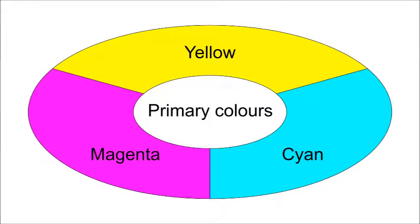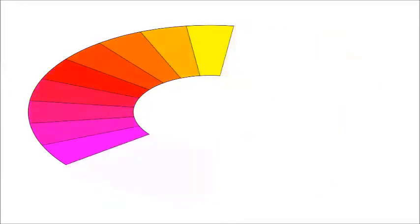These three colors are primary colors and can be mixed to create almost all of the colors that we see. Magenta and yellow can be mixed in different amounts to make reds and oranges.